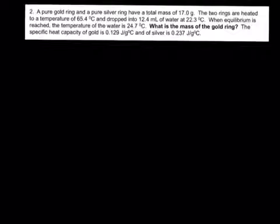A pure gold ring and a pure silver ring have a total mass of 17 grams. The two rings are heated to a temperature of 65.4°C and dropped into 12.4 milliliters of water at 22.3°C. When equilibrium is reached, the temperature of the water is 24.7°C. What is the mass of the gold ring? The specific heat capacity of gold is 0.129 J/g°C and of silver is 0.237 J/g°C.